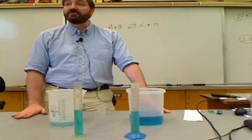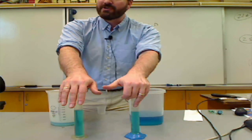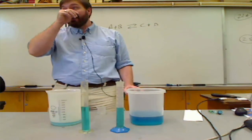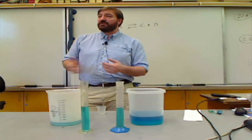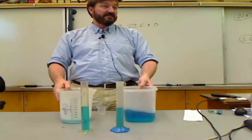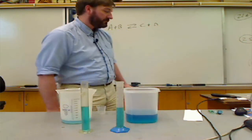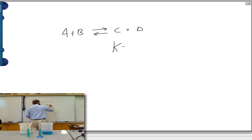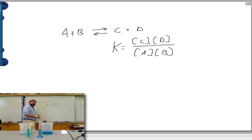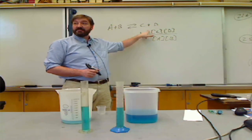At equilibrium, the concentrations do not have to be equal — they have to be stable, not changing. The rates of the forward and reverse reaction are equal. Whether you have more products or more reactants depends on the nature of your chemical reaction, the temperature, and what your reactions are. This reaction happens to be one where the concentration of the products is higher than the reactants. What would that tell us about the equilibrium constant — would it be greater than or less than one? What would the equilibrium expression look like? Based on what we see here, this value would be greater than one.